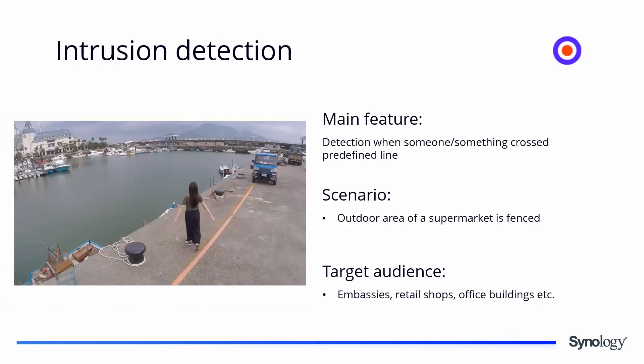The intrusion detection feature detects when someone or something crosses a predefined line. A good use case is for outdoor areas, supermarkets, or areas you'd like to fence off. Target audiences for intrusion detection include embassies, retail shops, and office buildings.